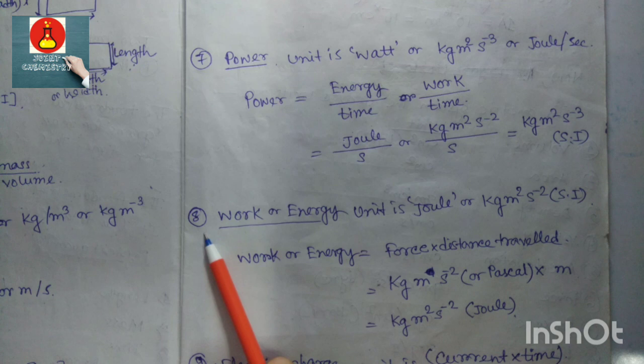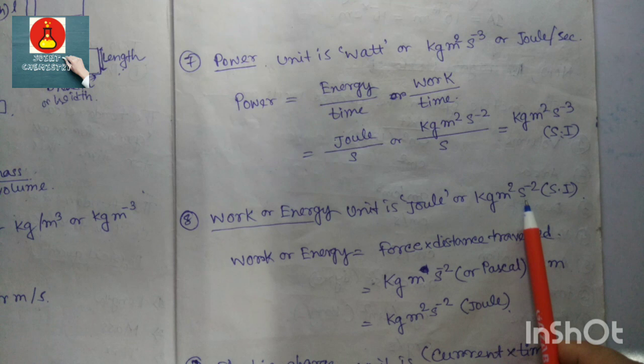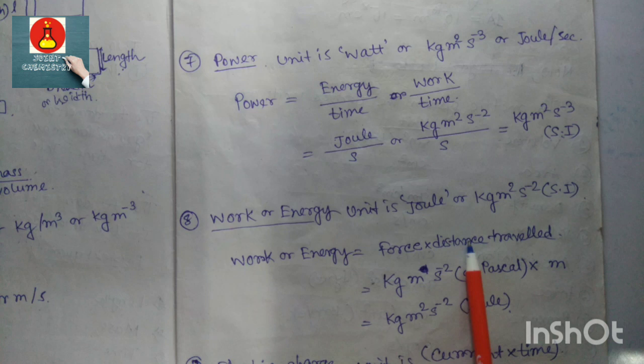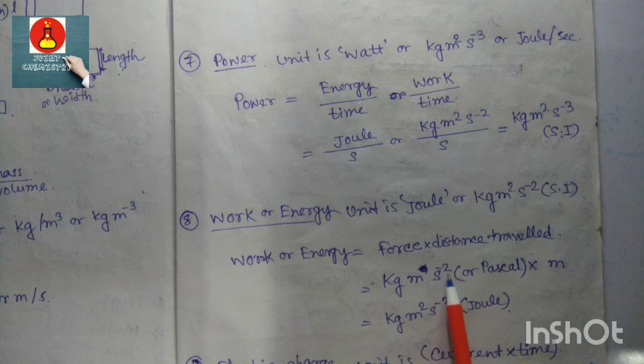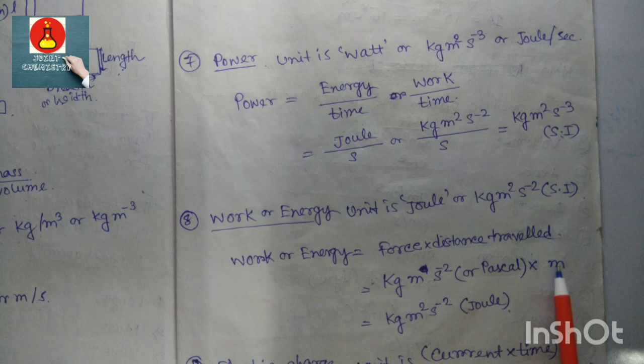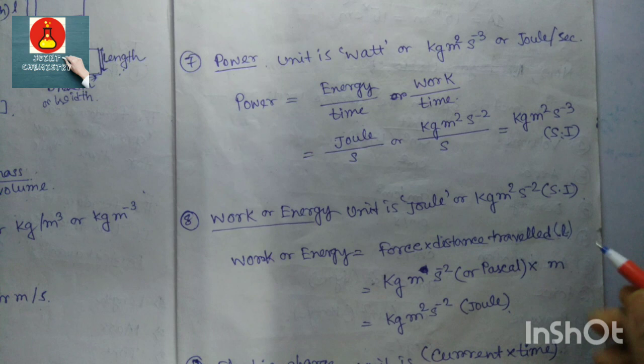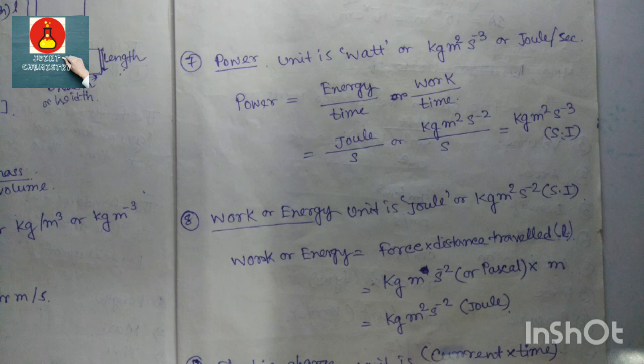Work: the SI unit is joule, or kg·m²·s⁻². Work or energy equals force times distance traveled. Force has unit kg·m·s⁻² and distance traveled is length L with unit meter, so the total unit is kg·m²·s⁻², which is joule.